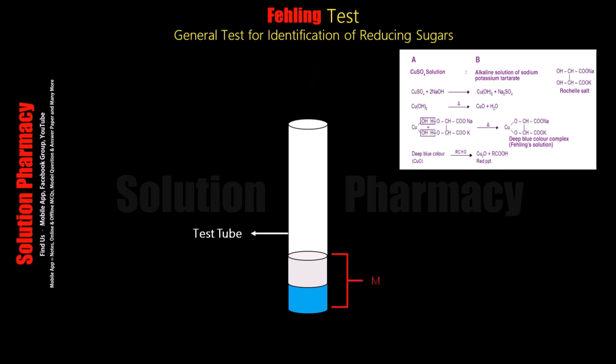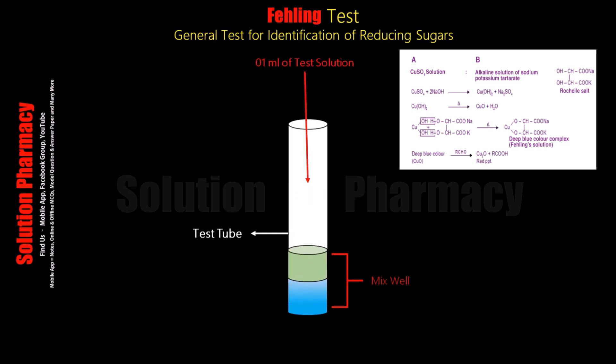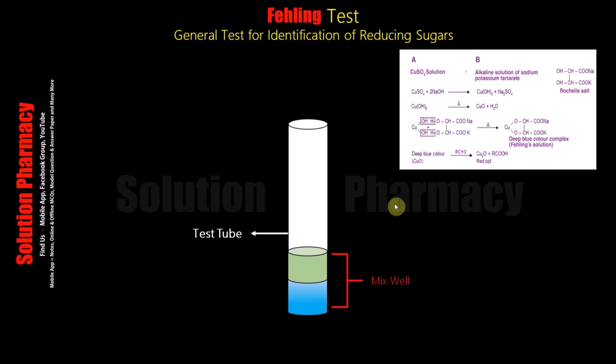Then add one ml of test solution and again mix the contents of the test tube. Then boil the contents in a boiling water bath. A practical video on the preparation of Fehling's solution A and B is already uploaded on our channel; the link is given in the description box.